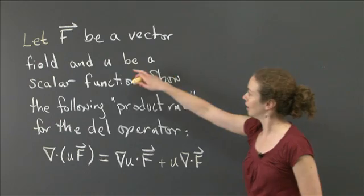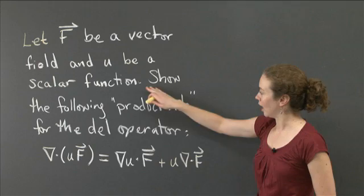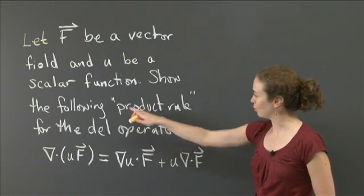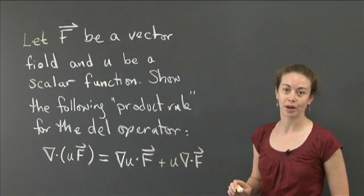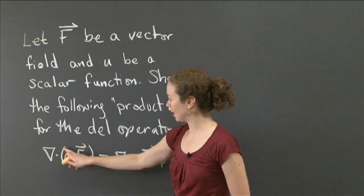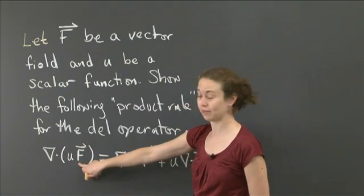We're going to let capital F be a vector field and u be a scalar function. And we want to show the product rule for the del operator, which should remind you of the product rule we have for functions. It is that del dot the quantity u times F, where u is the scalar function and F is the vector field,